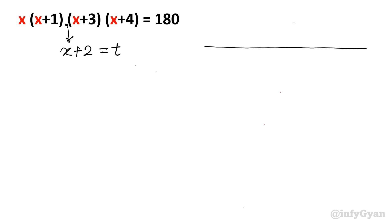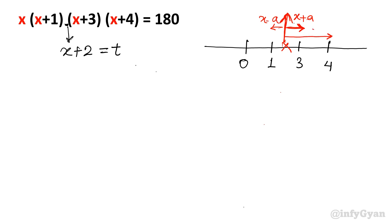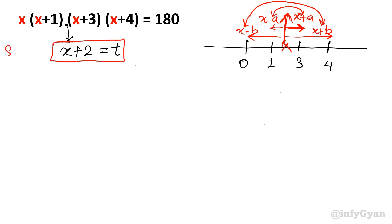There is a number line. Suppose this point is origin. So x, x+1, then 3 and 4. If I presume the x+2 point is in between, it is somewhere here. What we are doing is transforming — it is the difference of a square formula. So that is why we consider the substitution x+2 equal to t.